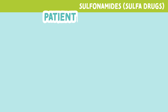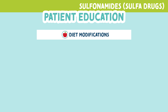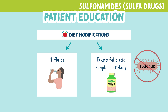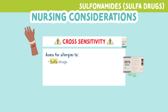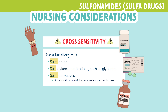We want to educate patients taking sulfa drugs to make some diet modifications. They should increase their fluids to decrease the risk for kidney stones, and they should take a folic acid supplement daily, since these medications inhibit folic acid synthesis. There is also a cross-sensitivity alert — assess allergies to sulfa drugs, sulfonylurea medications such as glyburide, and sulfa derivatives such as thiazide and loop diuretics like furosemide.